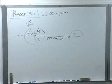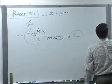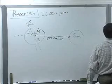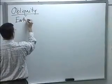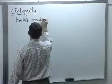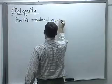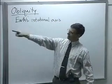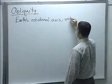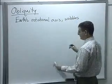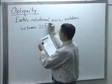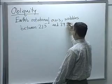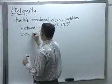So a third effect can be called obliquity, and this is that the Earth's rotational axis not only does it precess, but it also wobbles between extremes in a fairly regular cycle. Between 21.5 degrees and 24.5 degrees, and this occurs every roughly 41,000 years.